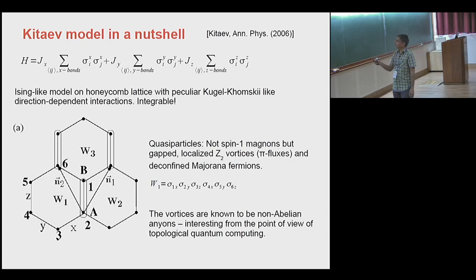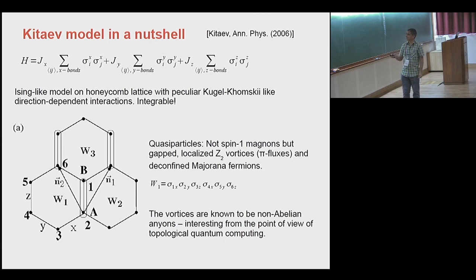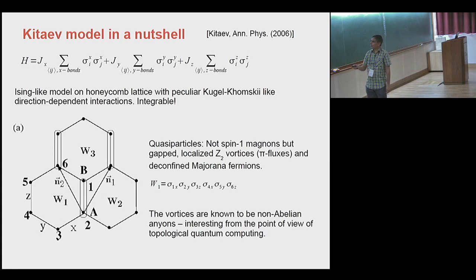It turns out that this model is integrable, and its classical realizations have long been known as Kugel-Khomsky compass models. They arise in manganites of that kind. Kitaev showed that the quasi-particles are not spin-1 magnons that you expect for an Ising magnet in 2D, but they are gapped localized Z-2 vortices, which he called pi fluxes, and some emergent Majorana fermions, which are deconfined — freely dispersing and non-interacting.